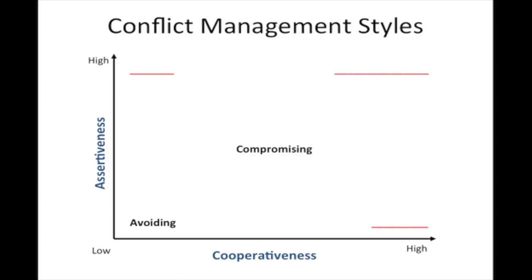On the top left, we have the forcing style — a win-at-all-cost conflict management style. This says I must win and you must lose; this is a zero-sum game. I will not be cooperative and I do not care about maintaining a relationship with you in the long run. So this is low cooperativeness and high assertiveness — the perfect distributive model: I win, you lose.